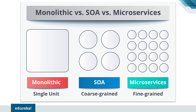Before we go into details about SOA and microservices, let's see what a monolithic application is and how it functions. You can think of a monolithic application as a container which is basically hosting a number of software components. There can be a number of software components as part of your software application, and if they are all hosted and delivered together, then that's called a monolithic application.